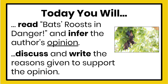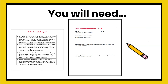Today you will read the text 'Bats Roosts in Danger' and infer the author's opinion. Then you will discuss and write the reasons given to support the opinion. You will need the text 'Bats Roosts in Danger,' page 3 of your journal, and a pencil.